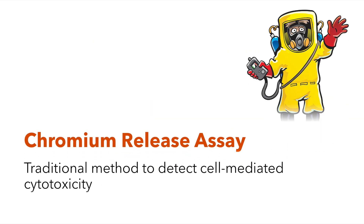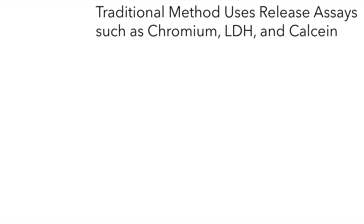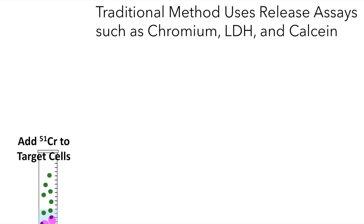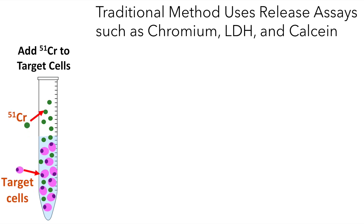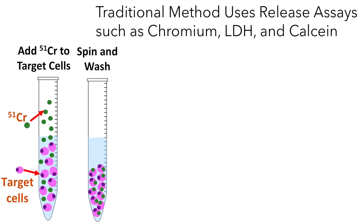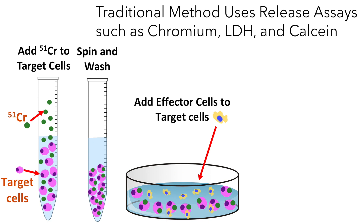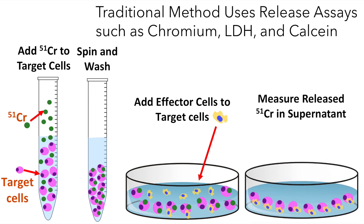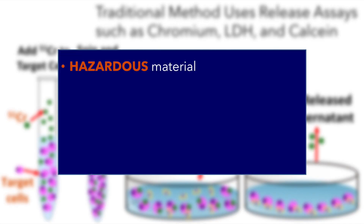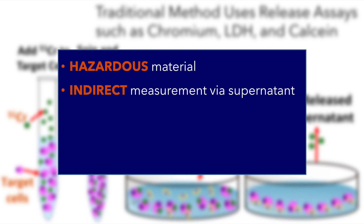Traditionally, cell-mediated cytotoxicity assays are performed by using release assays such as chromium, LDH, or calcein. Specifically for chromium release, target cells are labeled with chromium-51, washed, and then co-cultured with effector cells. As effector cells kill the target cells, chromium is released into the supernatant and is measured to determine the cell-mediated cytotoxicity. However, the problems with this method is that it is hazardous and it indirectly measures the cells through supernatant.